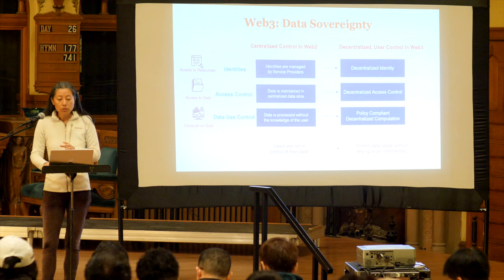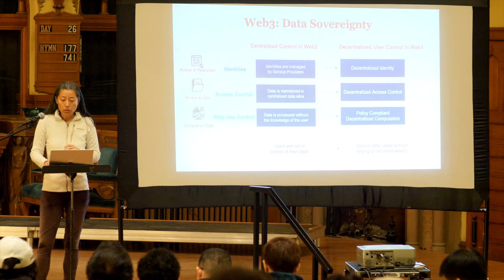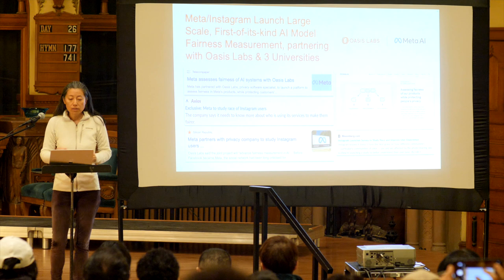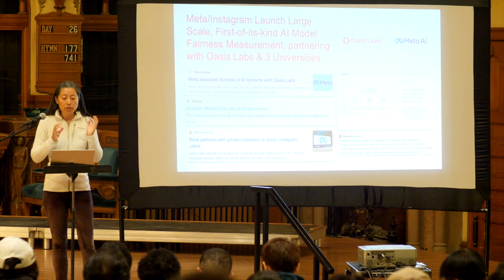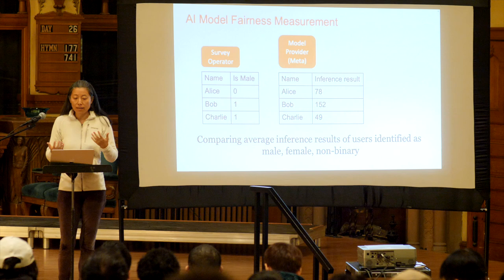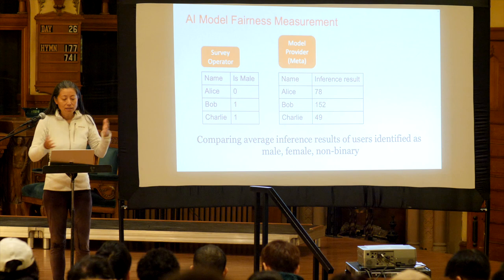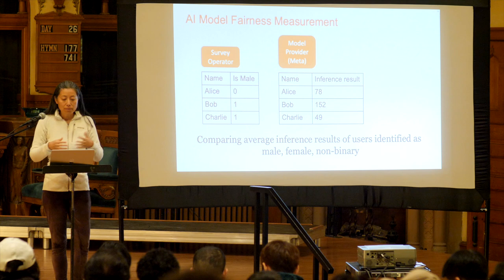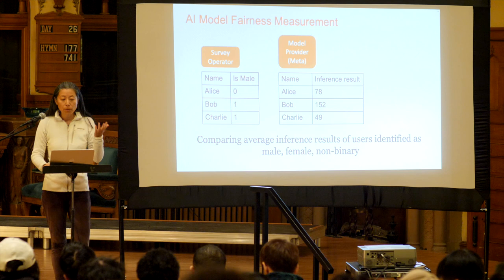Here I want to give some examples of recent work and future directions on how to actually achieve these new paradigms. One thing I wanted to briefly mention is a recent project we launched in partnership with Meta and Instagram — the first large-scale, first-of-its-kind AI model fairness assessment that is privacy-preserving. AI model fairness assessment is very important given that AI models are now ubiquitous and make very important decisions for users. The community has been asking whether Meta's and Instagram's models for recommendations are actually fair — whether they have biases based on gender, race, and so on.